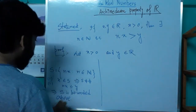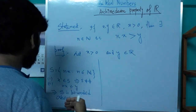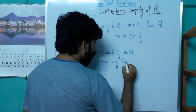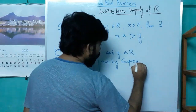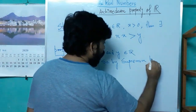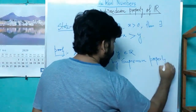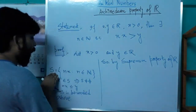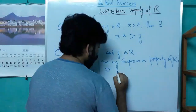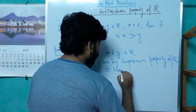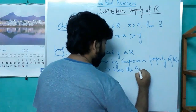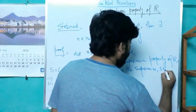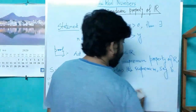Since S is non-empty and bounded above, by the supremum property of ℝ, this set has a supremum. Say the supremum is B.